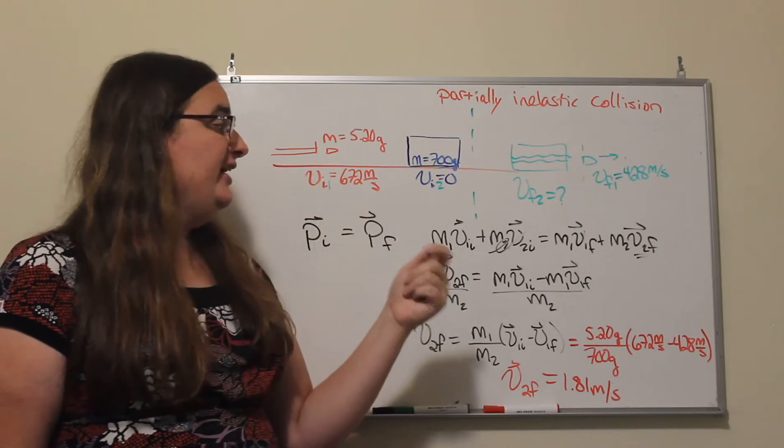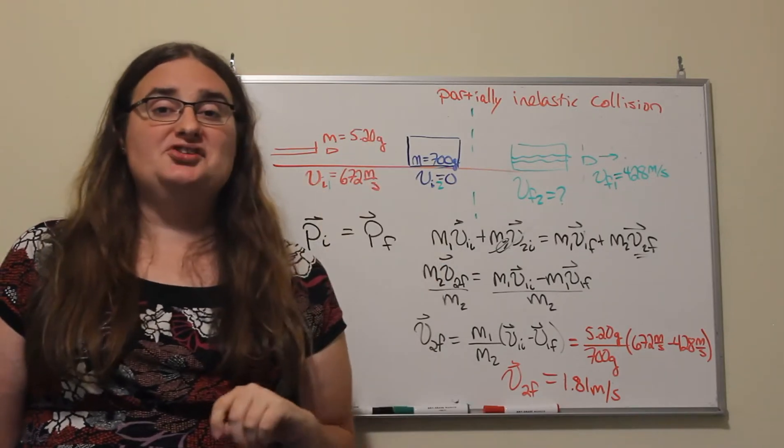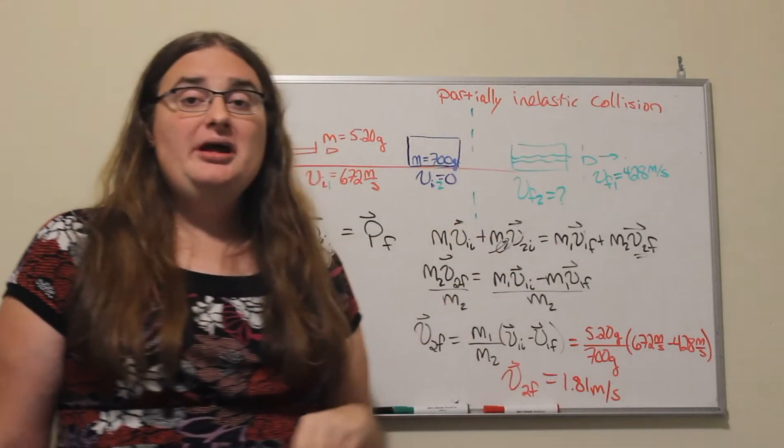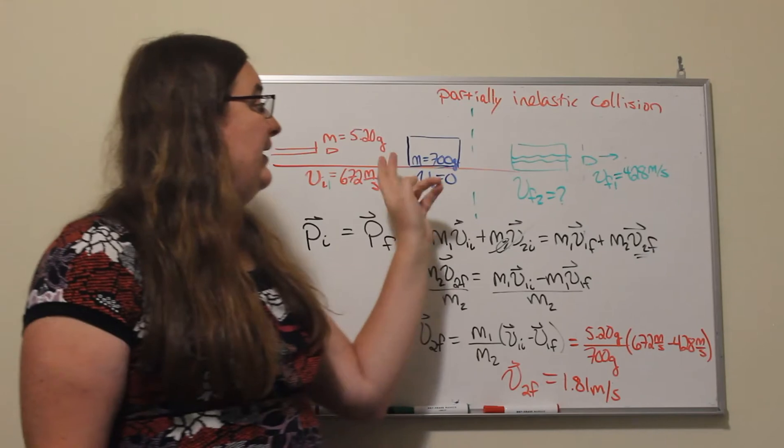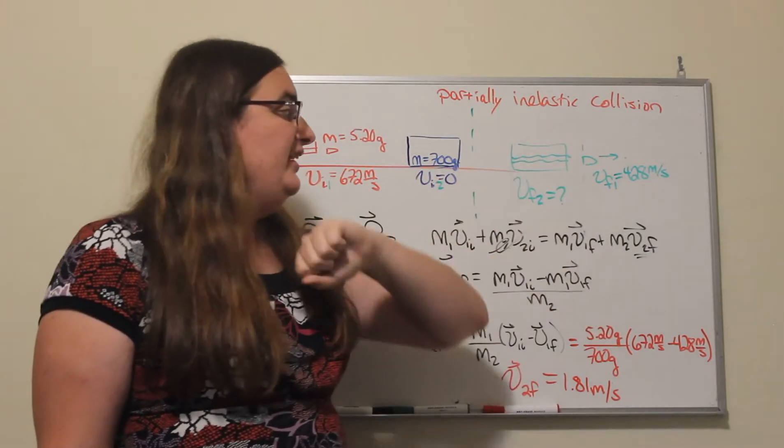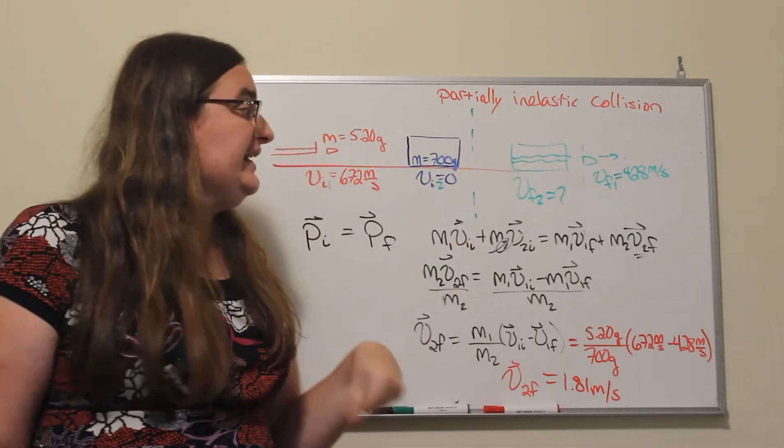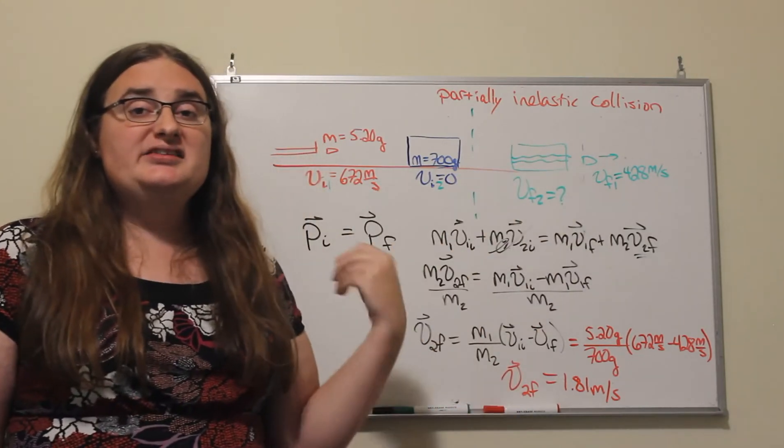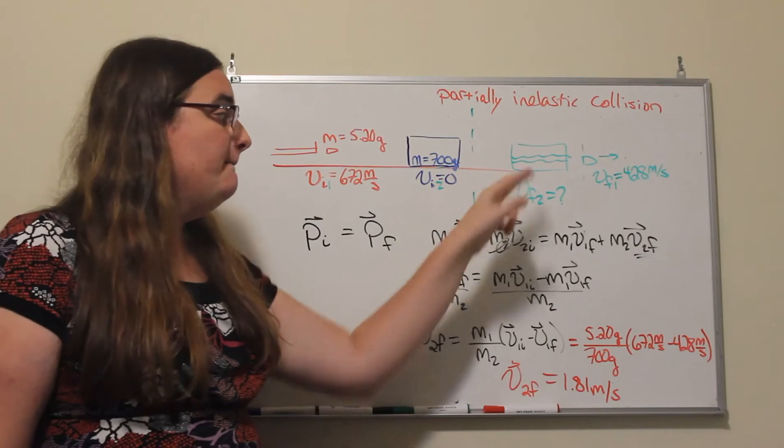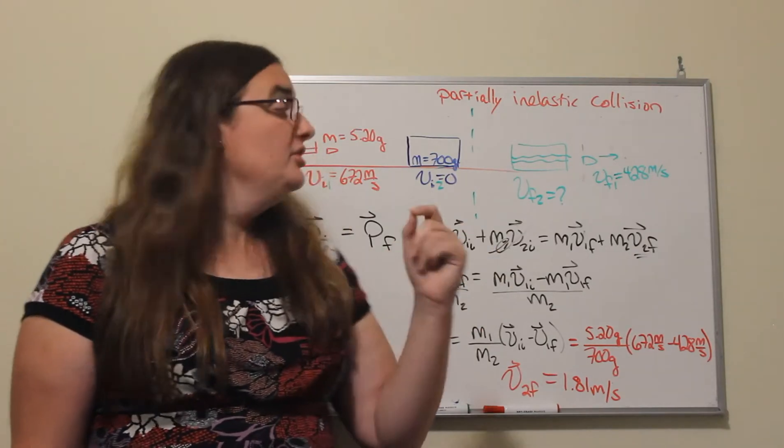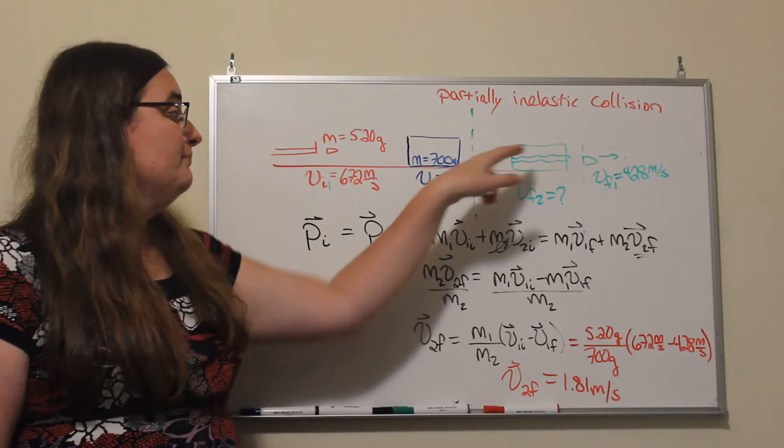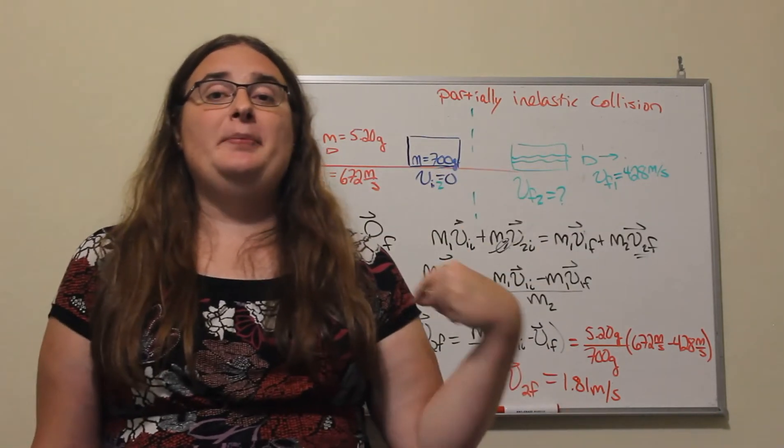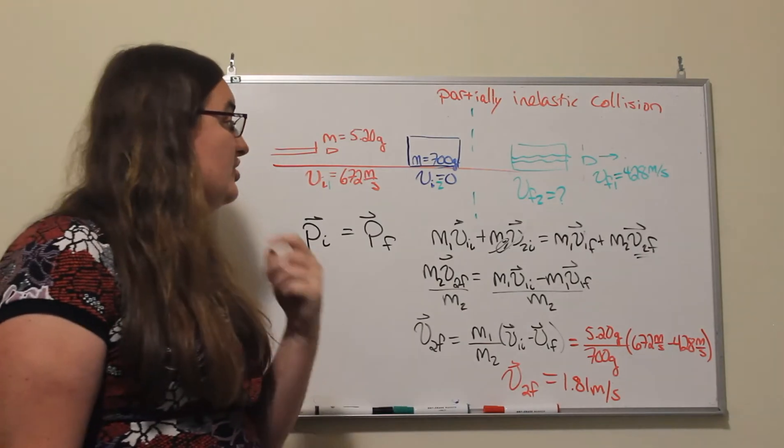There's a stationary block that has a mass of 700 grams and is initially at rest. The projectile collides with that block and passes through, and afterwards it's traveling at 428 meters per second. Neither mass of the object is significantly changed by that interaction. So how fast is that block going to be traveling after the projectile passes through?